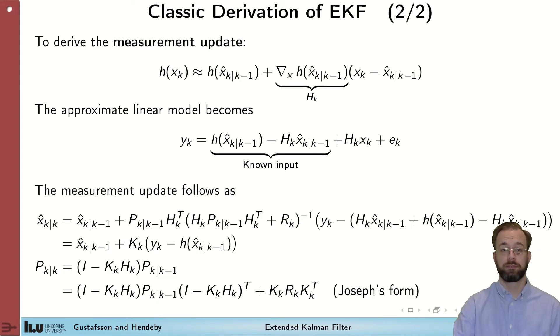Next, we will derive the measurement update. This is done in a way very similar to the time update. We start by linearizing h, in this case, around the best state knowledge that we have at the moment, that is x hat k given k minus 1. We get this form here, with the constants, the Jacobian, and the difference between the state and the linearization points.